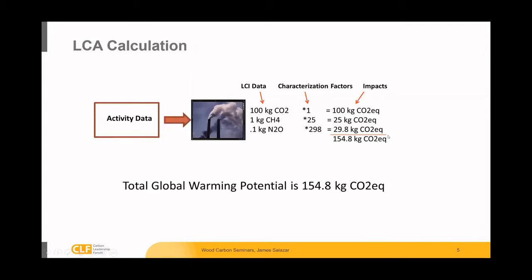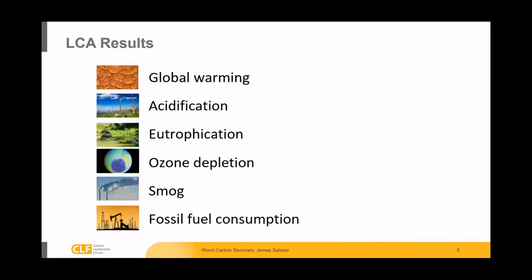In this case, 155 kilograms CO2 equivalent. That is an example for calculating the carbon footprint — the global warming potential of a product. In LCA, we cover a lot more — many different impacts. We actually calculate 25 indicators currently based on our ISO accounting rules. Some of those you're familiar with: global warming potential, acidification, eutrophication, ozone smog, and indicators like that.